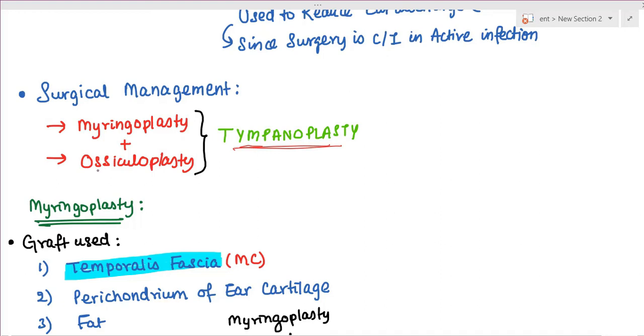Tympanoplasty is myringoplasty plus ossiculoplasty. Myring refers to tympanic membrane and plasty means reconstruction, so we are reconstructing the tympanic membrane. When we do both myringoplasty and ossiculoplasty, it is known as tympanoplasty.